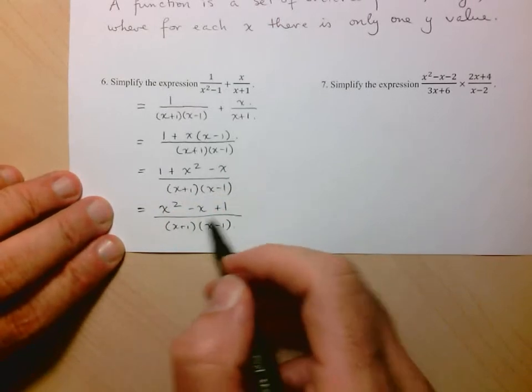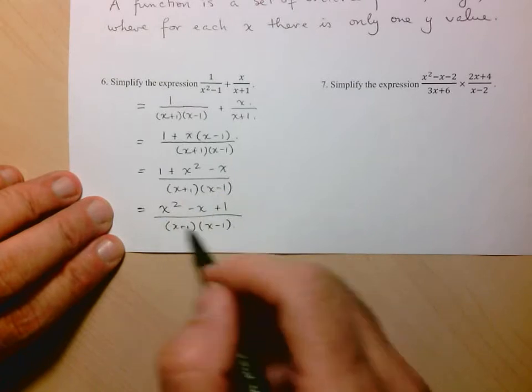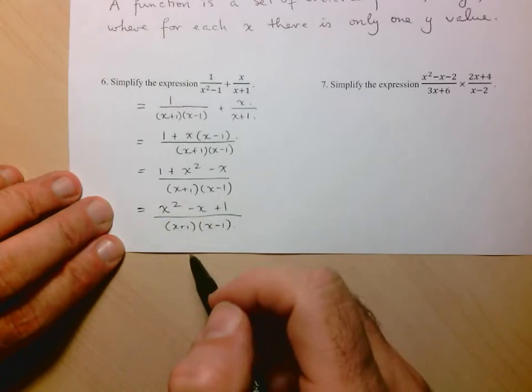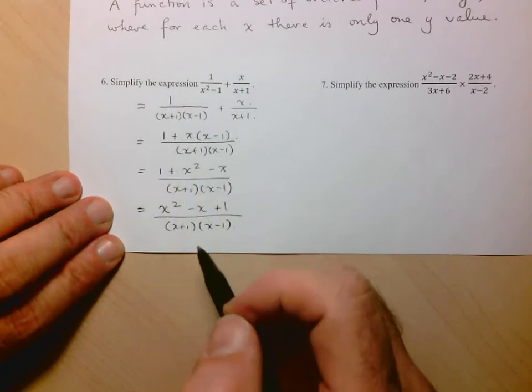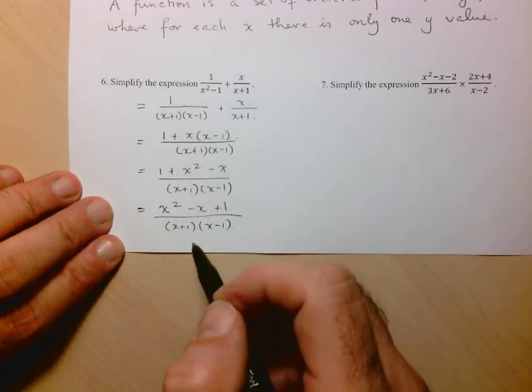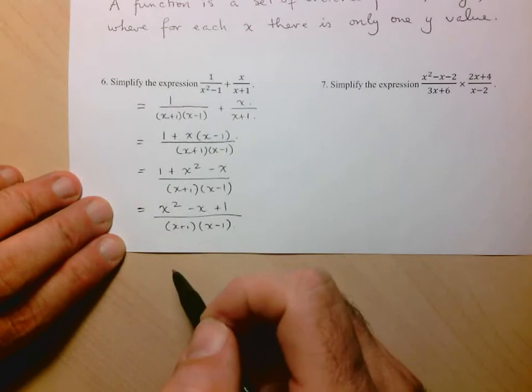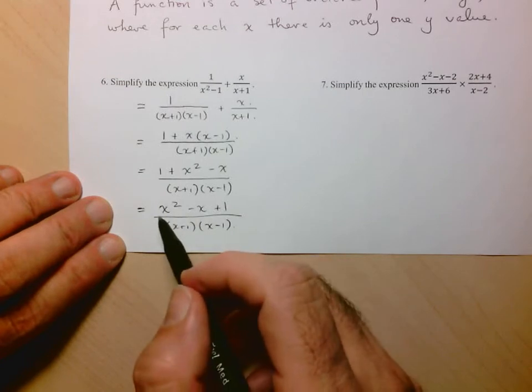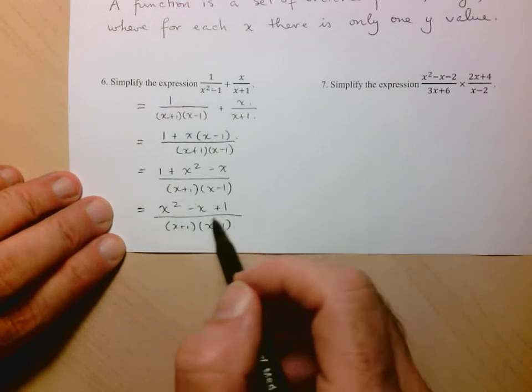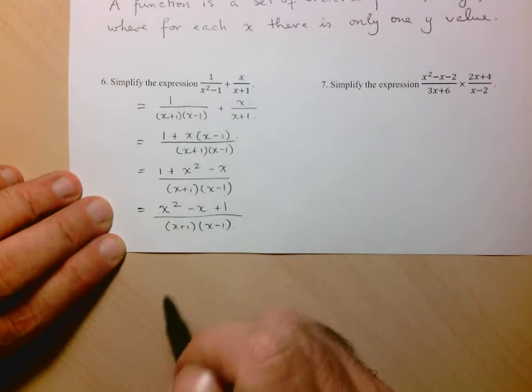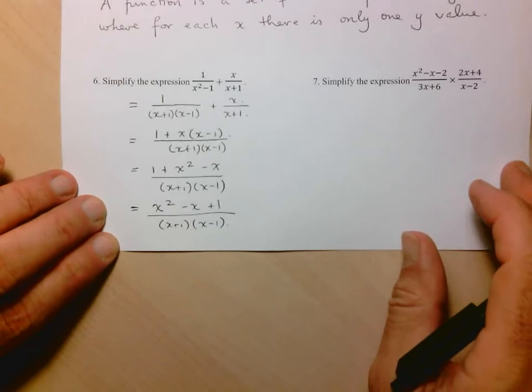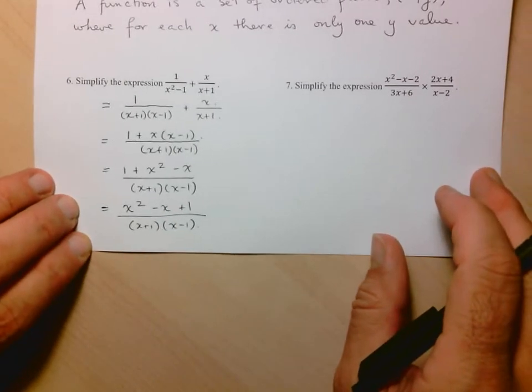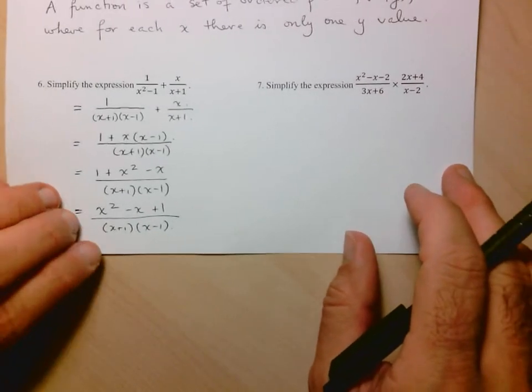Now, often, we'll state any restrictions on the expression. I don't necessarily need to do that here. I'm just asking you to simplify it. But of course, x can't be negative 1 or 1. Now, another thing that you should look for is, can the numerator be factored to see if you can simplify any further. And you look at this trinomial, and it won't factor. So that's as far as you can go. That's how you'd leave your answer.